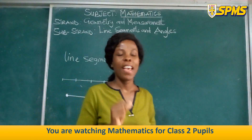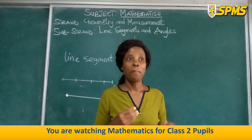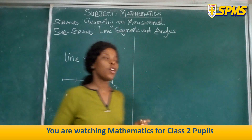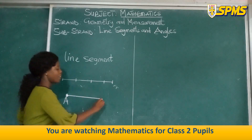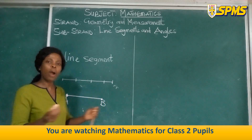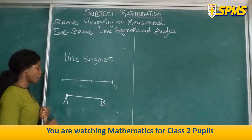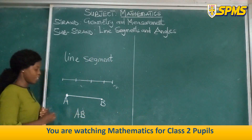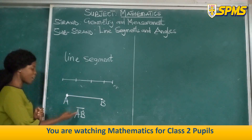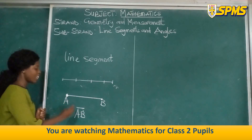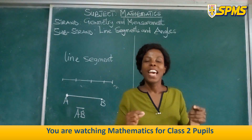Now we are going to learn how to name a line segment. A line segment is named using letters of the alphabet — A, B, C, D, and so on. My line segment has A at one point and B at the other point. So how do I write this? You pick the two letters and put them together: A, B. Then you put a line at the top of the letters. This means line segment AB. Pick your exercise book and practice drawing and naming a line segment on your own.